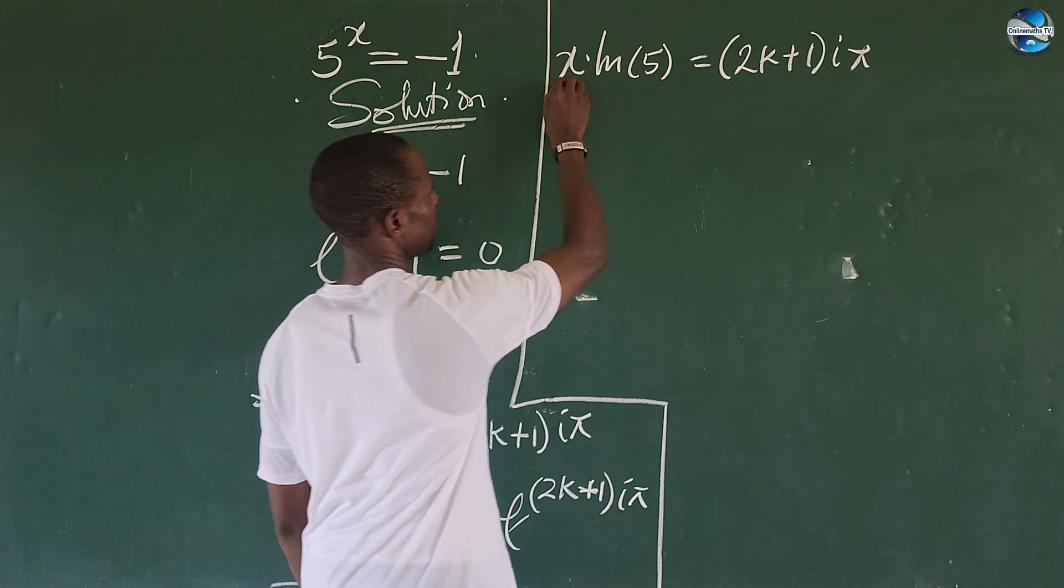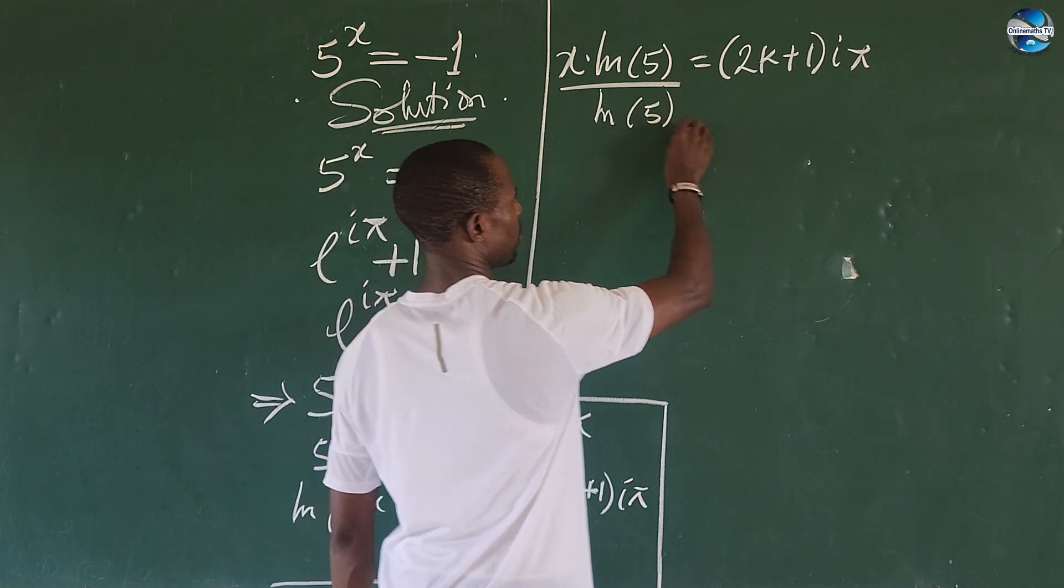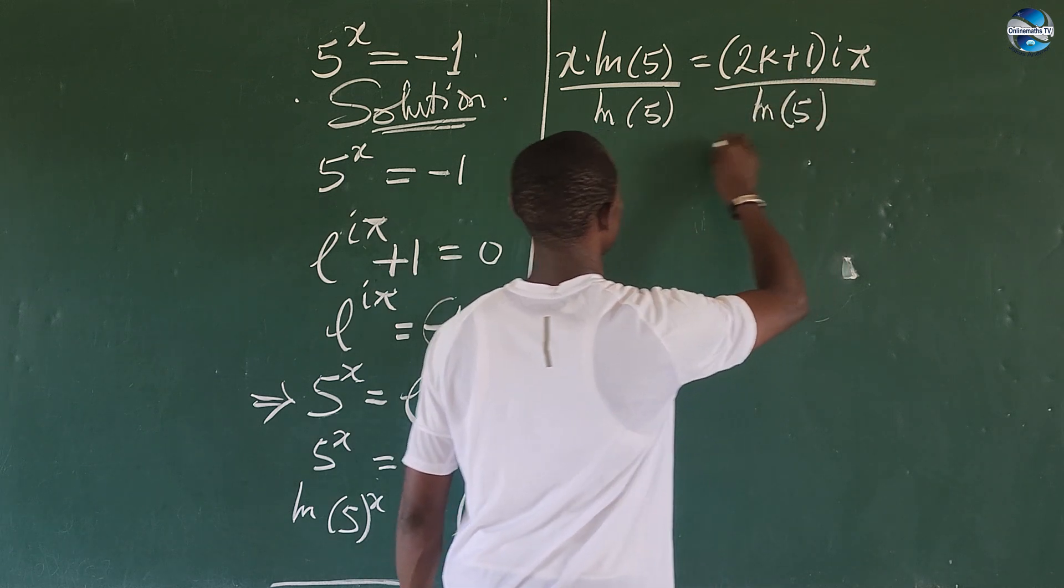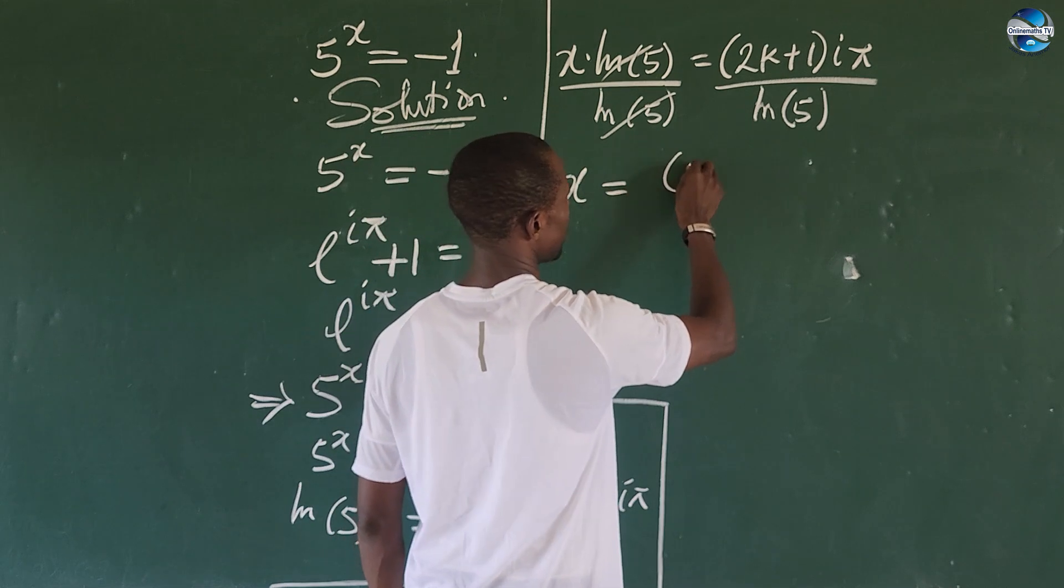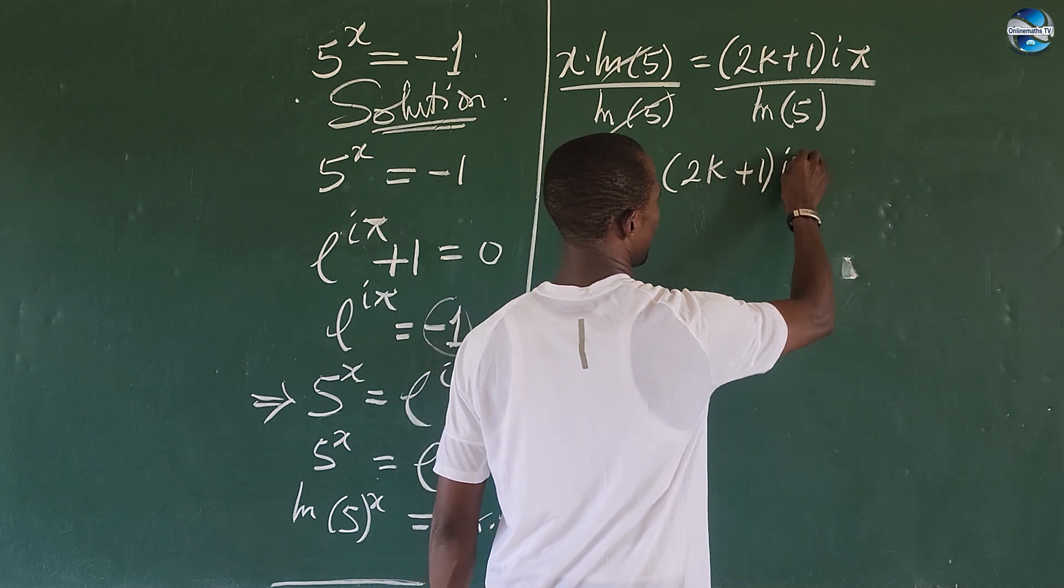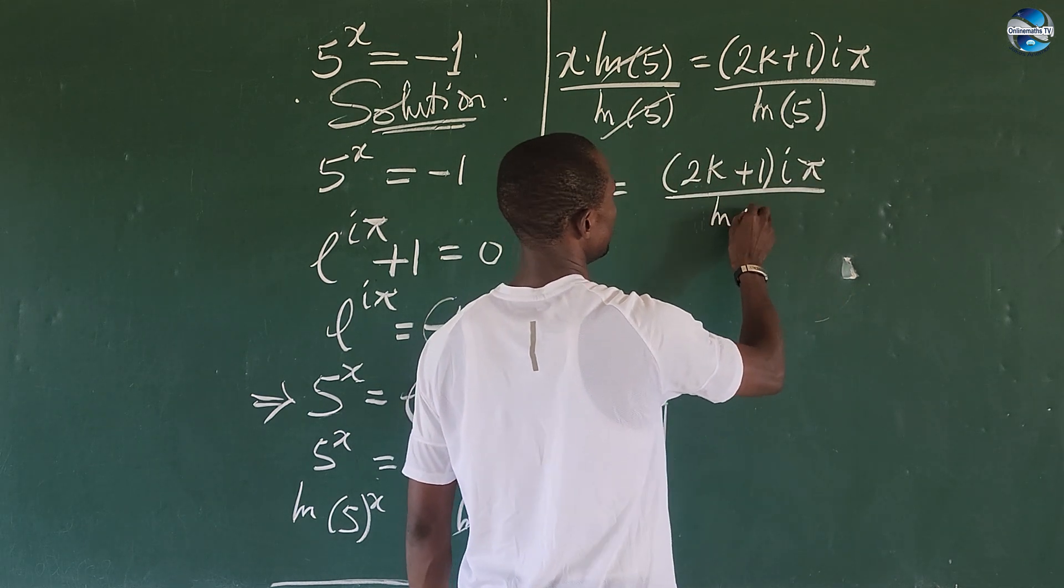So quickly divide by ln of 5 here, equally divide this side by ln of 5 here. So this leaves the system. So we have x equals to bracket 2k plus 1 bracket times i pi all over ln of 5.